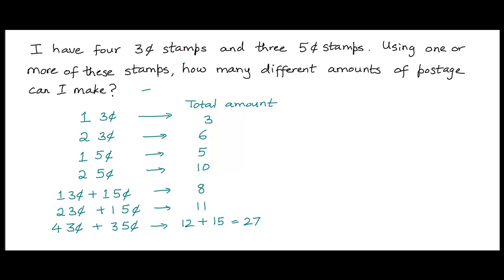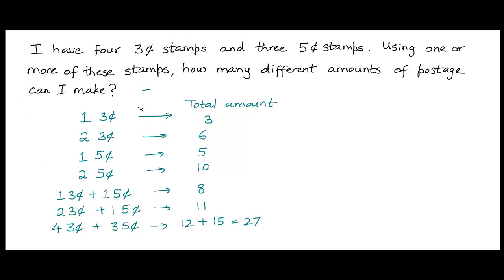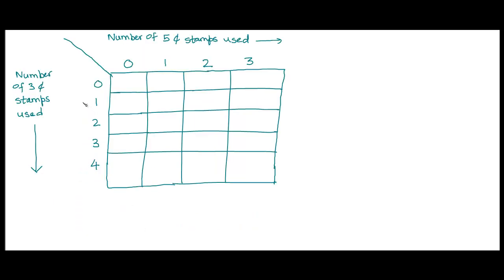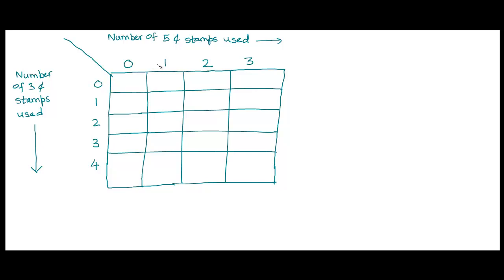We can do that by means of a table. Along the rows of the table, I have shown the number of three-cent stamps that we could use. Along the columns, I have shown the number of five-cent stamps. Since we are given four three-cent stamps, I could use one, two, three, or all four of them — or opt to use none. Similarly for the three five-cent stamps, I could use one, two, three, or none of them. This table shows all the combinations of postages possible.